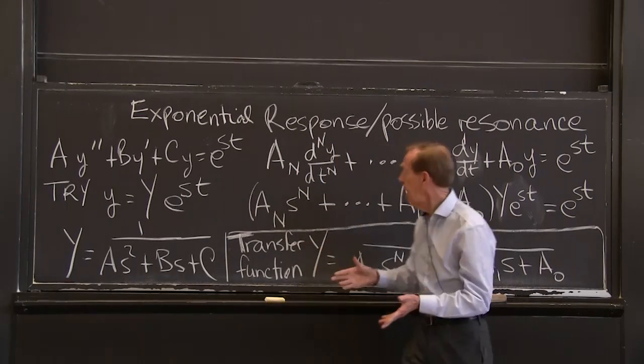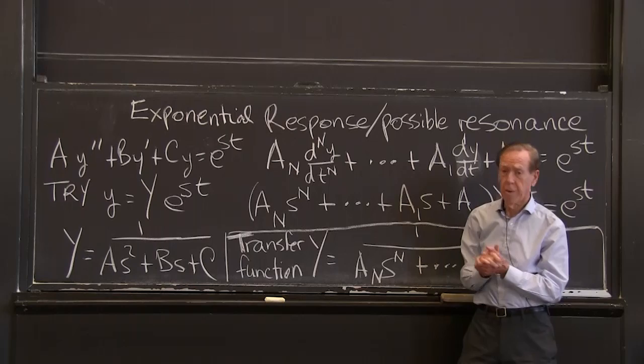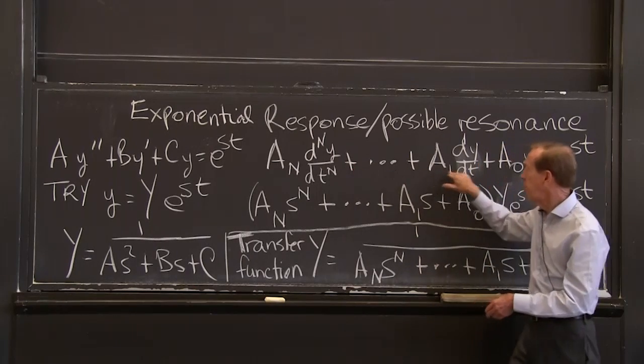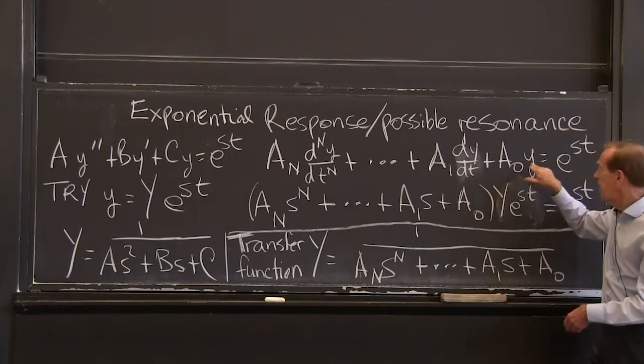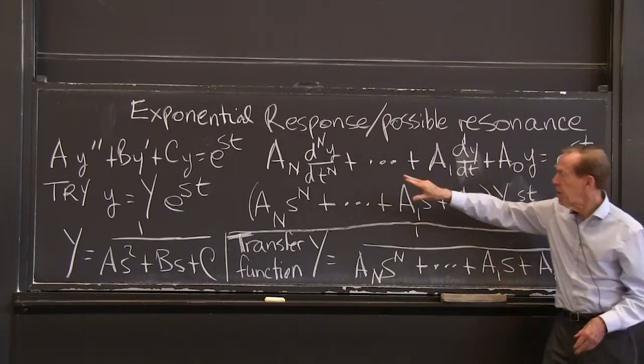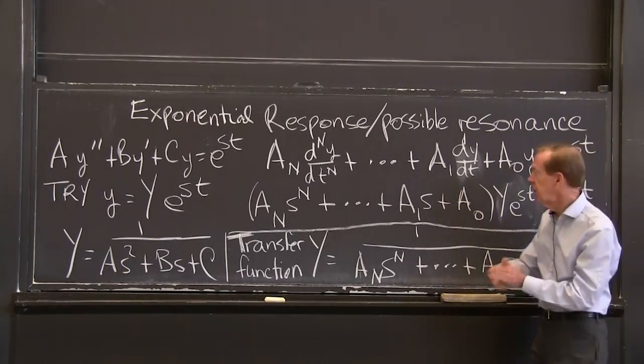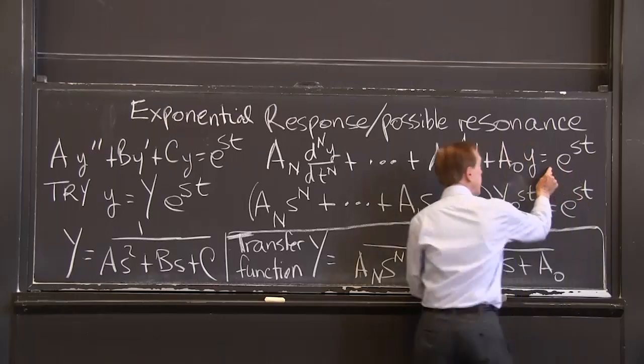And it could be an nth order equation. We could have the nth derivative and all lower derivatives, the first derivative, the function itself, the zeroth derivative, with coefficients, constant coefficients, equaling e to the st.